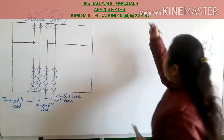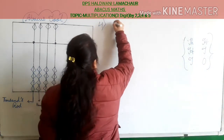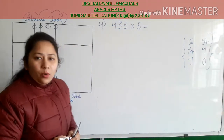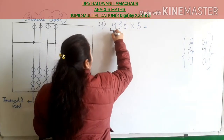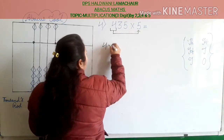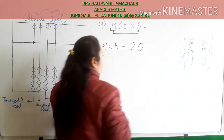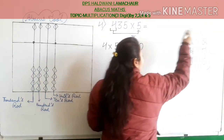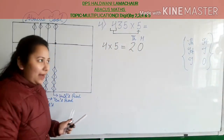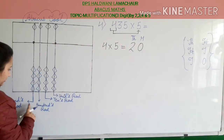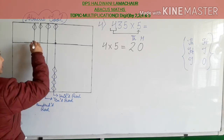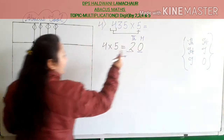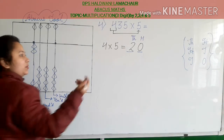The fourth sum is 435 multiplied by 5. As you know, we will multiply the first digit with 5: 4 into 5 is 20. According to the pattern, the first digit goes in thousands rod and the second in hundreds rod. Put 2 beads up in thousands rod. Then 0 in hundreds rod — 0 means nothing, so it is completed.